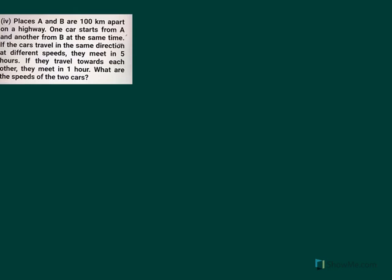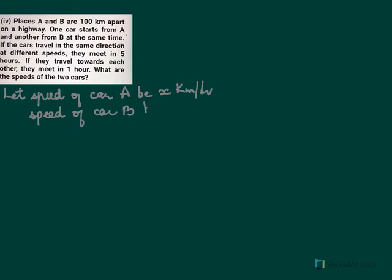In this problem, we have two cars — one starting from A and the other from B, and A and B are 100 kilometers apart. We will take the speed of car A as X kilometers per hour and the speed of car B as Y kilometers per hour. Here we have place A and place B, which are 100 kilometers apart.